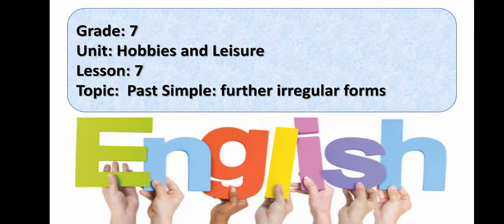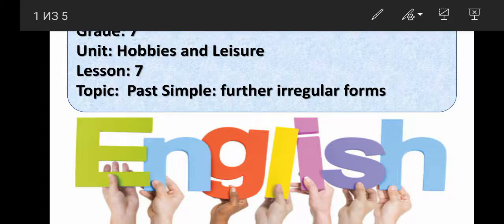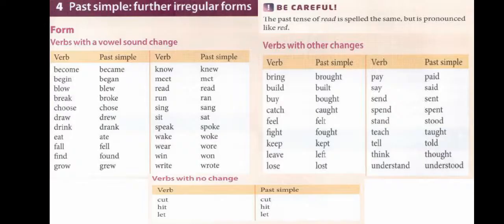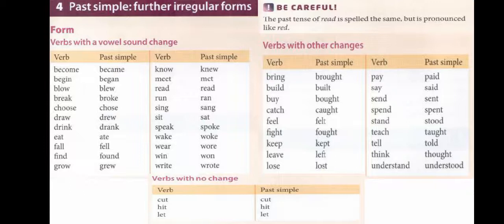There are lots of irregular verbs in English. With some, we form the past simple by changing a vowel sound. With others, we have to make different changes. With some verbs, the past simple is the same as the infinitive. Now please look at these verbs and read them.